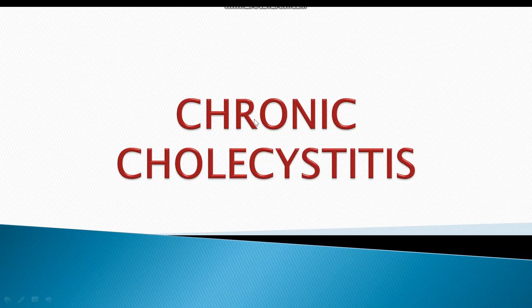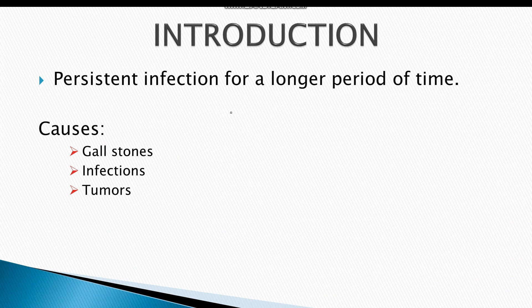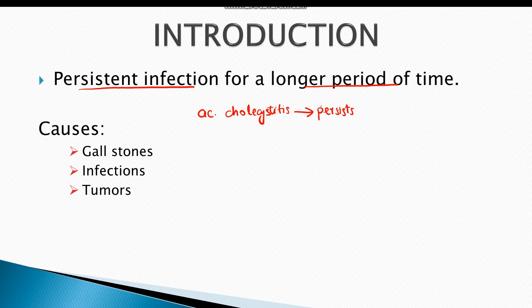The next topic is chronic cholecystitis. Chronic cholecystitis refers to persistent infection of the gallbladder for a longer period of time. An acute infection of the gallbladder, also known as acute cholecystitis, which is of intermittent nature, persists over time for a considerable duration, resulting in repeated bouts of attack, ultimately converting into chronic cholecystitis.